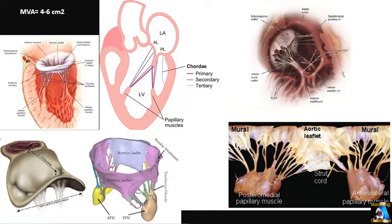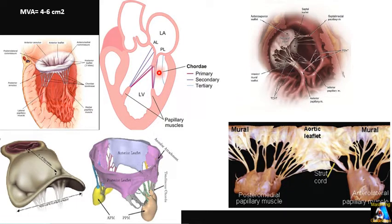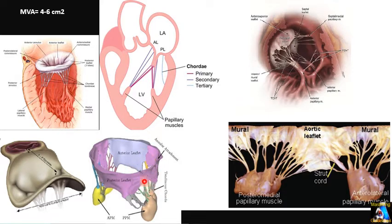The structure that keeps the mitral valve functioning correctly is called the subvalvular apparatus, which includes the papillary muscles, chordae tendineae, and the myocardial wall holding the ring of the mitral valve. The pattern of connecting the chordae tendineae to the mitral valve is unique and amazing. We have three types of chordae tendineae, like tendons connected from the tip of the finger-shaped papillary muscles that come from the free wall and septum. We have two papillary muscles — anterolateral and posteromedial — and each papillary muscle connects to both the anterior and posterior leaflets.